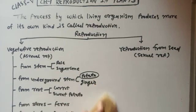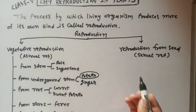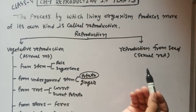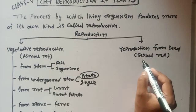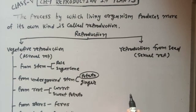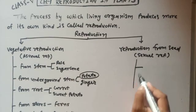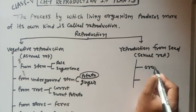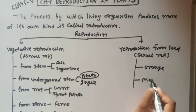And now, second type: reproduction from seed, which is a type of sexual reproduction. In this type, male and female gametes or plants are involved. They produce male gametes and female gametes, and they fertilize and make seed which grows into a new plant. Its examples are orange, mango, etc.